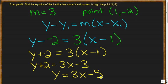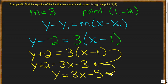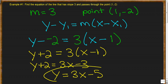Following this along: I distributed between those lines, then subtracted 2 to get our final slope-intercept answer.